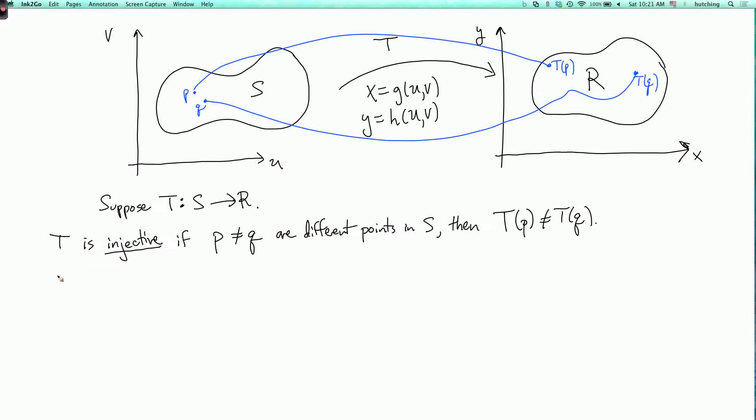And then we say that T is surjective if every point in R is T of some point in S.